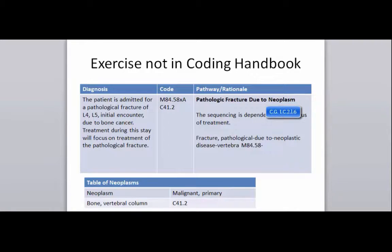Here's another exercise not in the coding handbook — it is very common in hospitals. A patient is admitted for a pathological fracture of L4-5, initial encounter, due to bone cancer. Treatment during this stay will focus on the treatment of the pathological fracture. That documentation is important because our coding guidelines tell us that the sequencing is dependent on the focus of treatment when you have a pathological fracture due to a neoplasm. Your pathway is: fracture, pathological is your main term, with subterms due to neoplastic disease, vertebrae — it takes you to M84.58. When you go to the tabular you see that a seventh character is needed. We know the initial encounter is our seventh character, so we need a placeholder X in the sixth character position. That indicates the pathological fracture as the principal, because our focus of treatment during this encounter is the treatment of that pathological fracture.